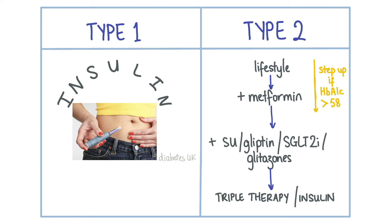Type 1 diabetes is treated with insulin as by definition it is an insulin deficiency. Insulin injection sites should be rotated to prevent lipodystrophy, which refers to fibrosis and damage of the tissue underlying the injection site.